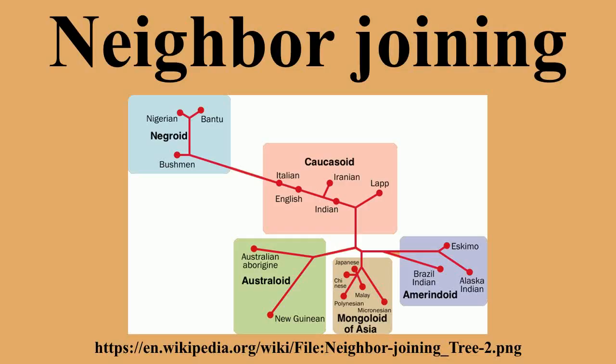In bioinformatics, neighbor joining is a bottom-up clustering method for the creation of phylogenetic trees, created by Naruya Saitou and Masatoshi Nei in 1987. Usually used for trees based on DNA or protein sequence data, the algorithm requires knowledge of the distance between each pair of taxa to form the tree. Neighbor joining as minimum evolution.